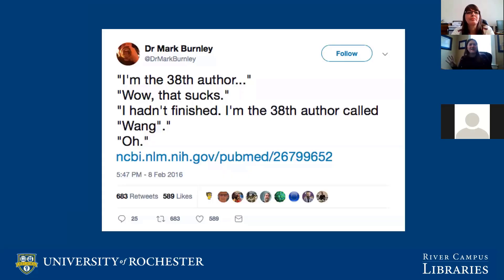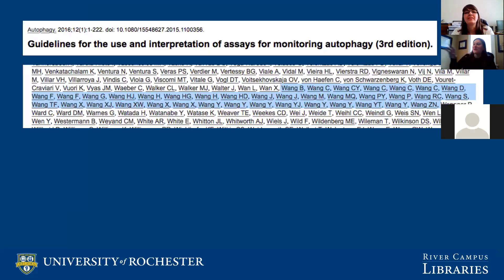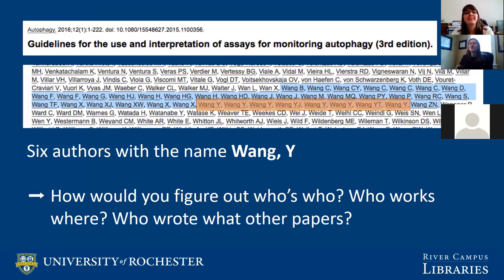Here is my favorite example of unique identifiers, using ORCID. I am the 38th author with the name Wang on this paper — an actual paper. There are 38 people with the last name Wang on it, and six authors who have the last name Wang comma Y. How in the world would you even find yourself in there? How would people figure out who is who, who works where, who wrote what other papers, or what their area of expertise is? You would just have to randomly click each one and try to figure it out. That is where unique identifiers come in.